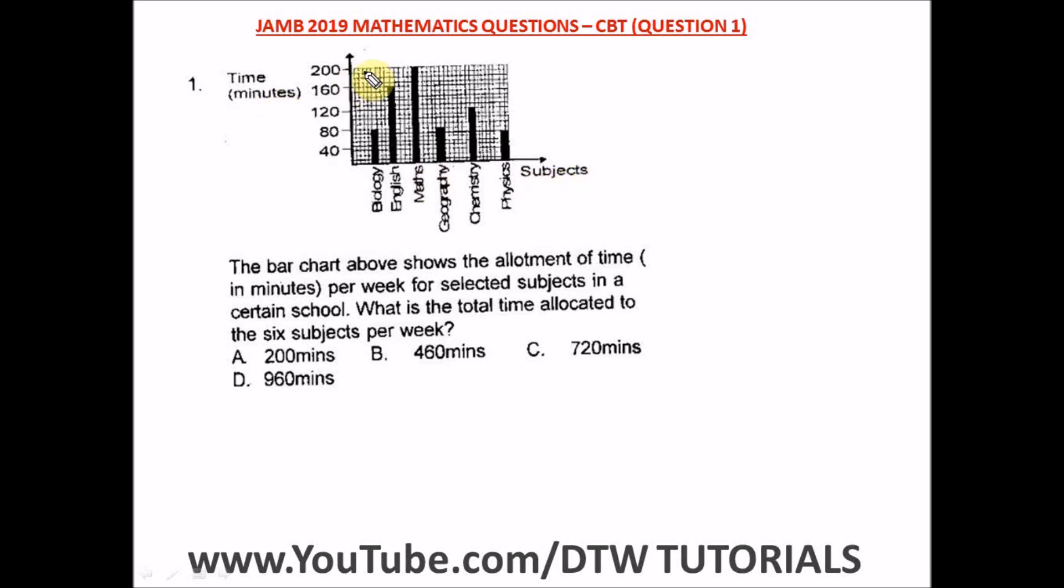The x-axis shows subjects and the y-axis shows time in minutes. The question asks: what is the total time allocated to the six subjects per week?